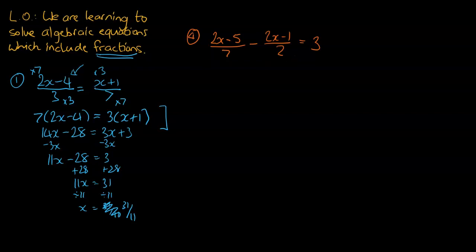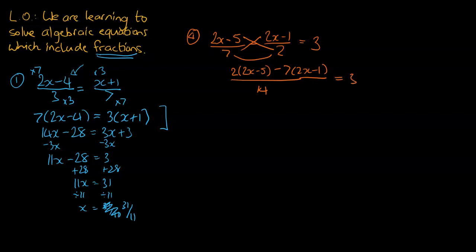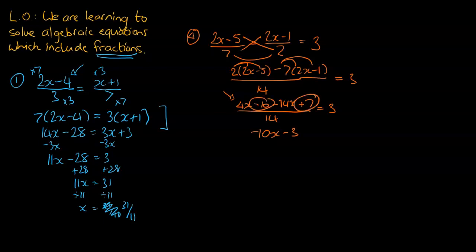So we're going to do the crisscross smiley face method. The denominator is going to be 14 because 7 times 2 is 14. We cross this way, so it's going to be 2 times (2x minus 5), and then subtract the other way: 7 times (2x minus 1), all over 14, which equals 3. We've got a pretty messy numerator, so let's expand: 2 times 2x gives 4x, then minus 10, then minus 14x, then plus 7, all divided by 14 equals 3. We still need to simplify the top line: 4x minus 14x gives negative 10x, and negative 10 plus 7 gives minus 3. So we have negative 10x minus 3 all over 14 equals 3.